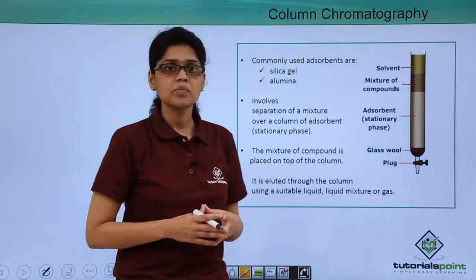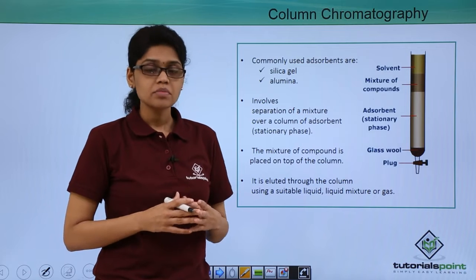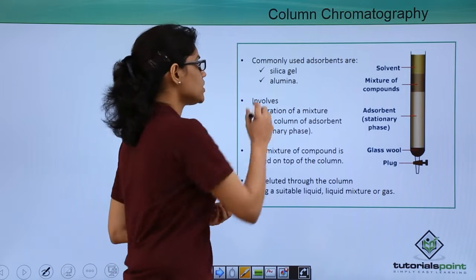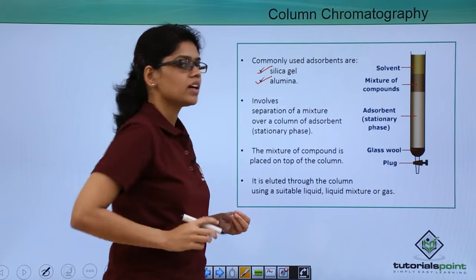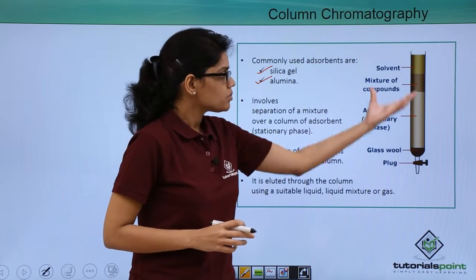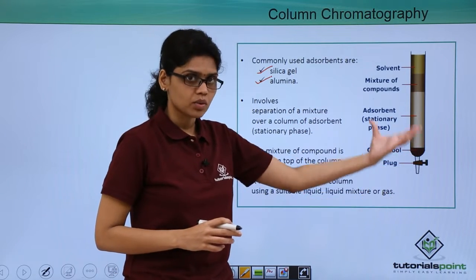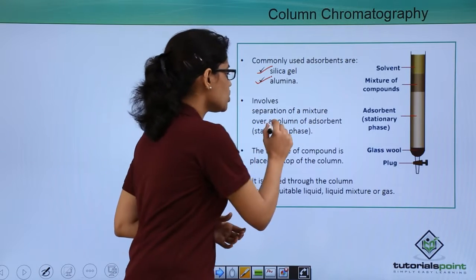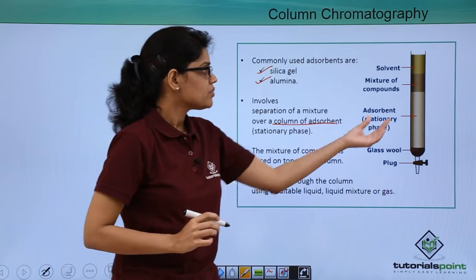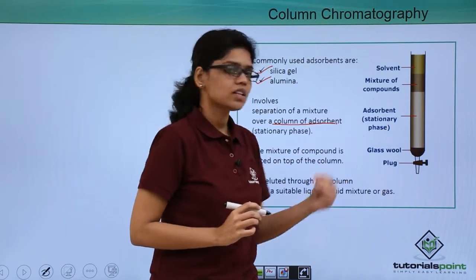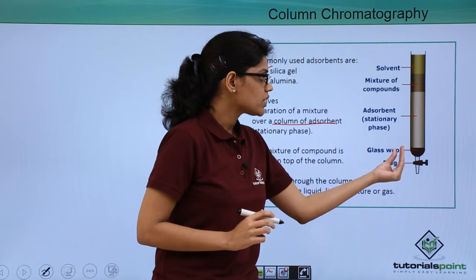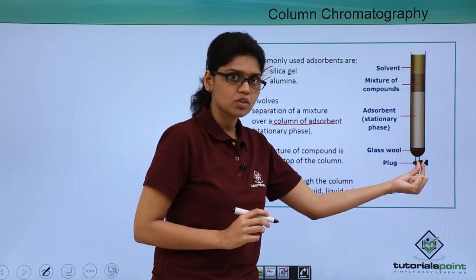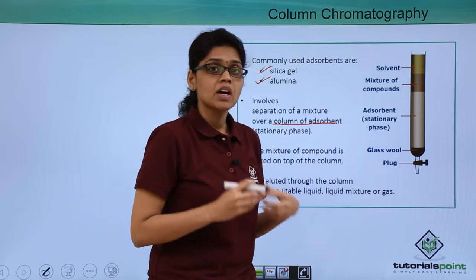In column chromatography, the most commonly employed adsorbents are silica gel and alumina. A simple column chromatographic setup looks like this: you have the separation of a mixture over a column of adsorbent which acts as the stationary phase. There is a glass wool or cotton plug kept at the bottom of the column.